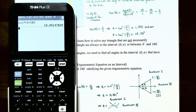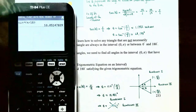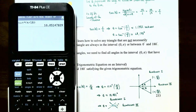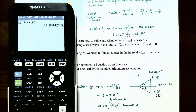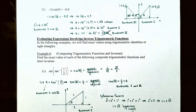Since the inverse sine function only exists for angles between negative pi over 2 and positive pi over 2, and the sine function was the positive value π/18, we're not in quadrant 4. The angle −10.051 degrees is not a solution. Only the positive value 10.051 degrees is valid because the sine function must have been positive — equal to π/18.